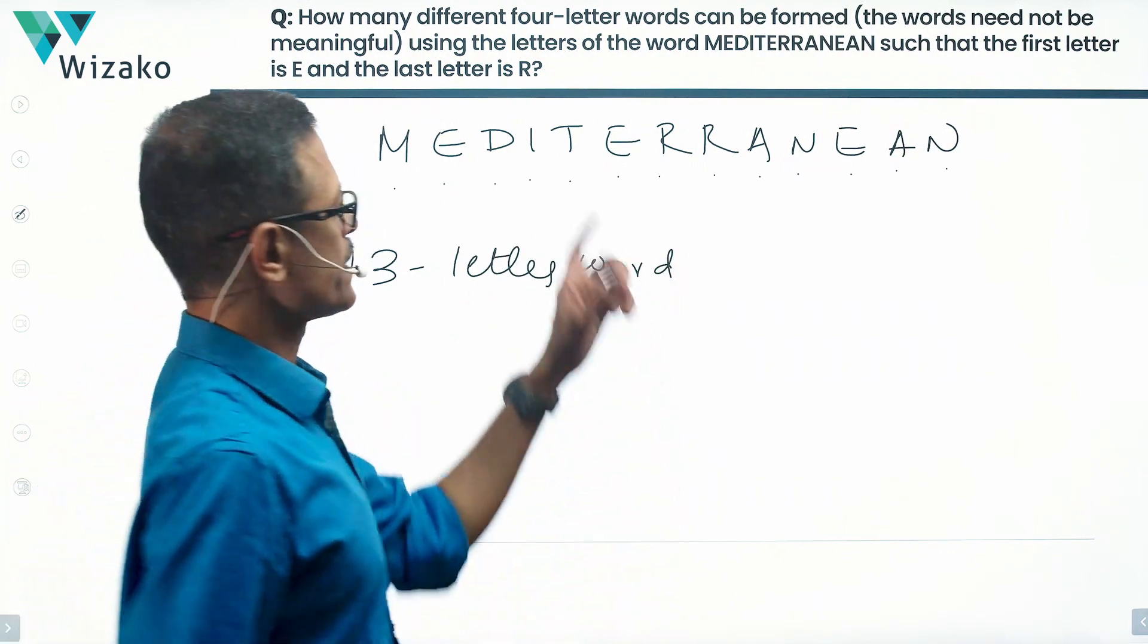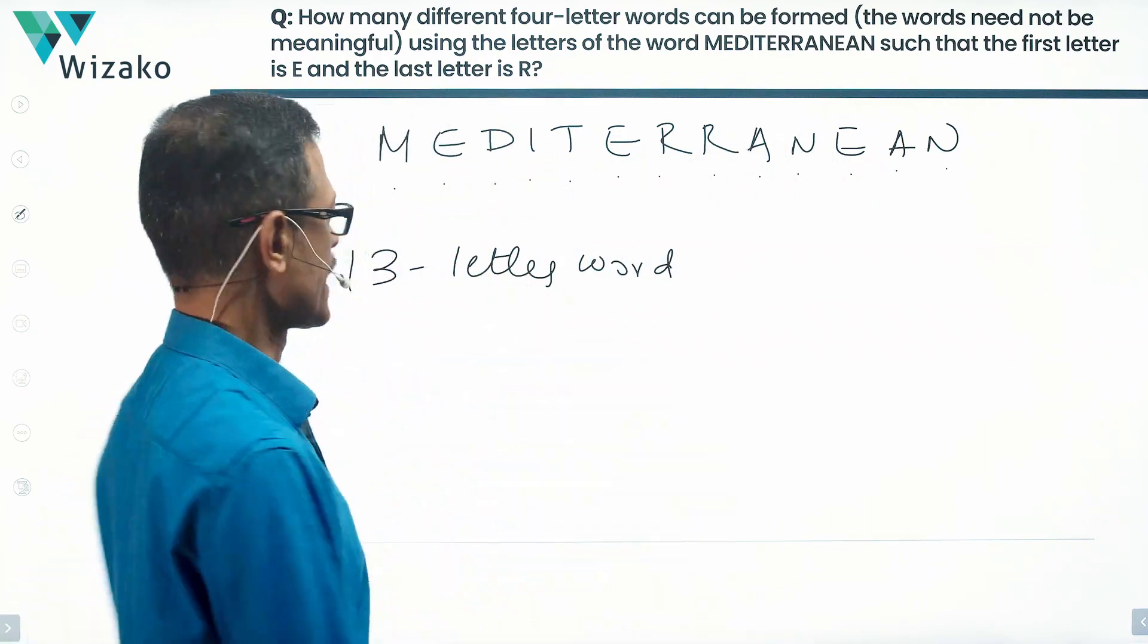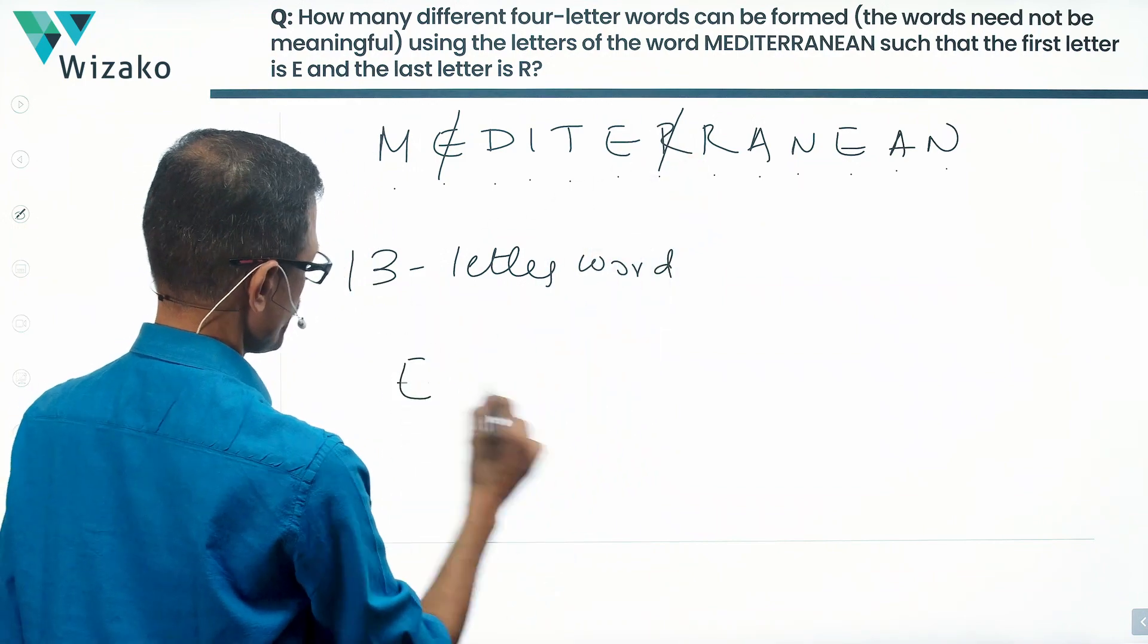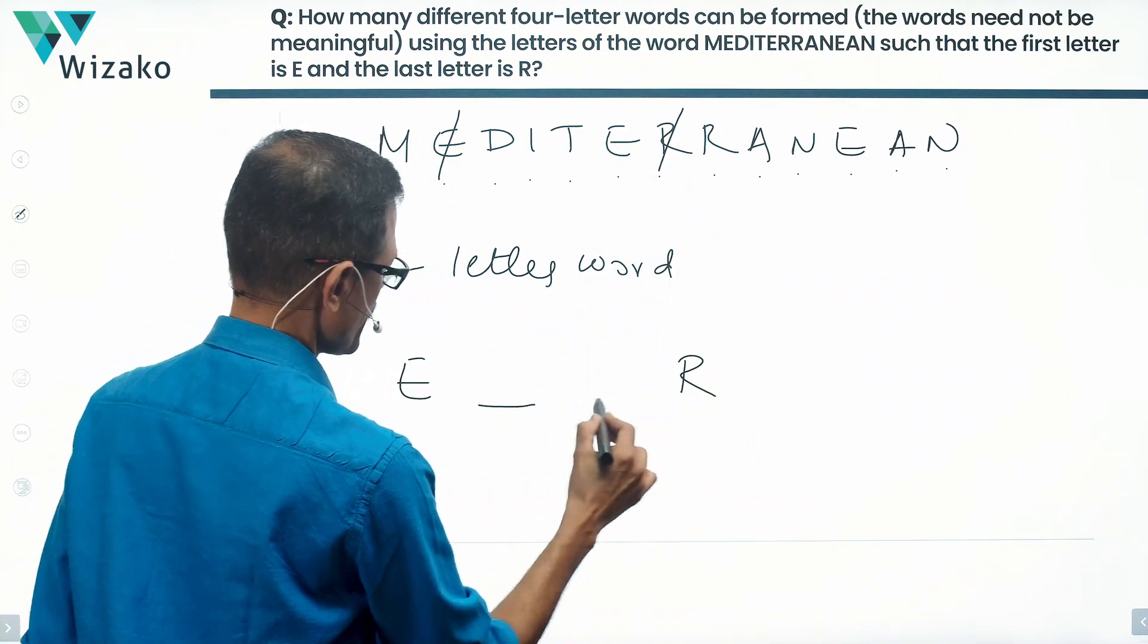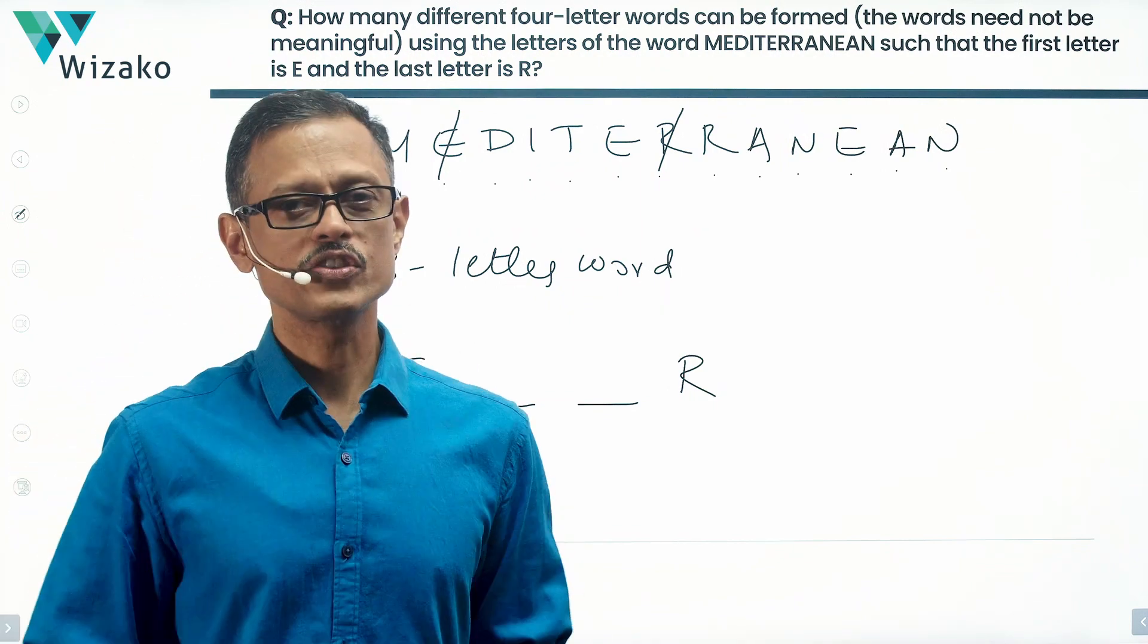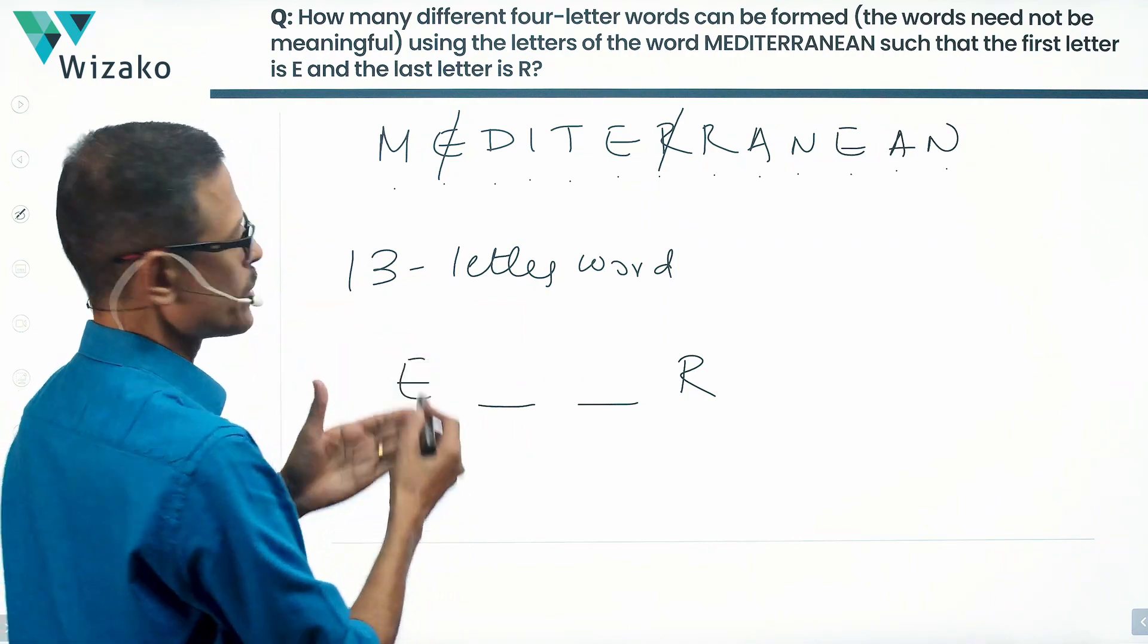The constraint is the first letter should be an E and the last letter should be an R. So I'm going to pick one E, one R. E is the first letter, R is the last letter. I need two more letters because we are forming four-letter words using the letters of Mediterranean. So if two have been taken out, we're left with 11.